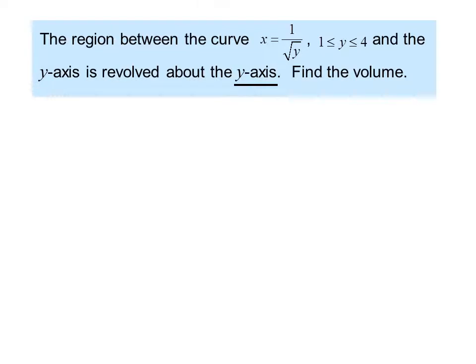Here's an example. The region between the curve x equals 1 over radical y, where y is between 1 and 4, and the y axis is revolved about the y axis. Find the volume. First we draw a sketch. We pick some y values and calculate x values.